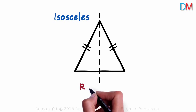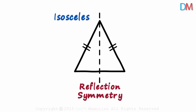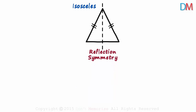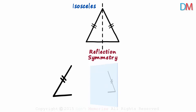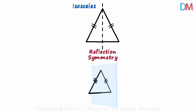This is called reflection symmetry. Why is it called that? If we take one part and keep it against a mirror, we will get the original shape. The reflection of one part completes the shape.